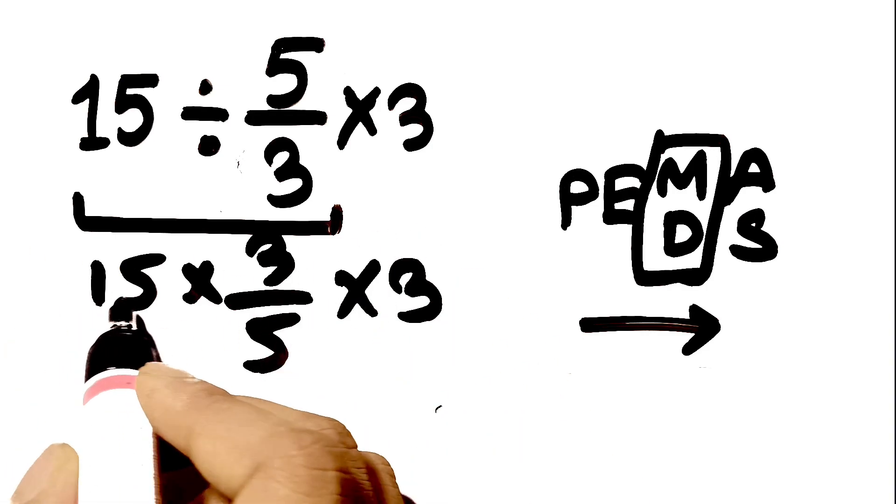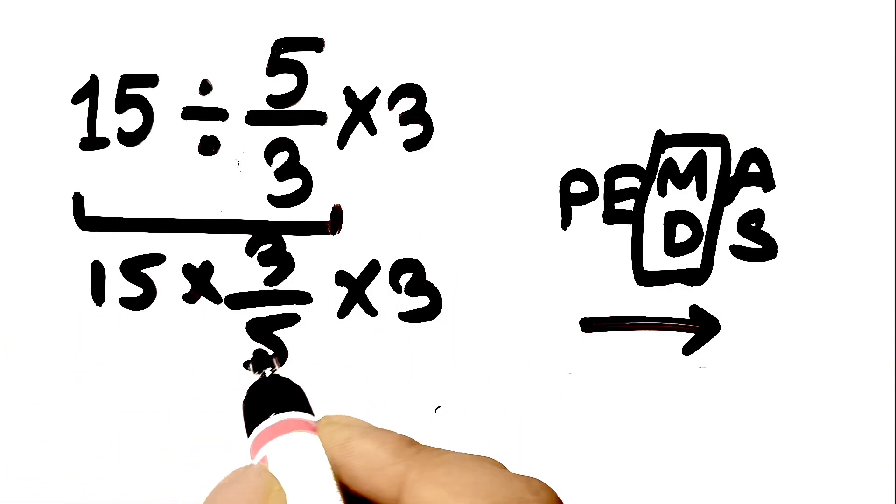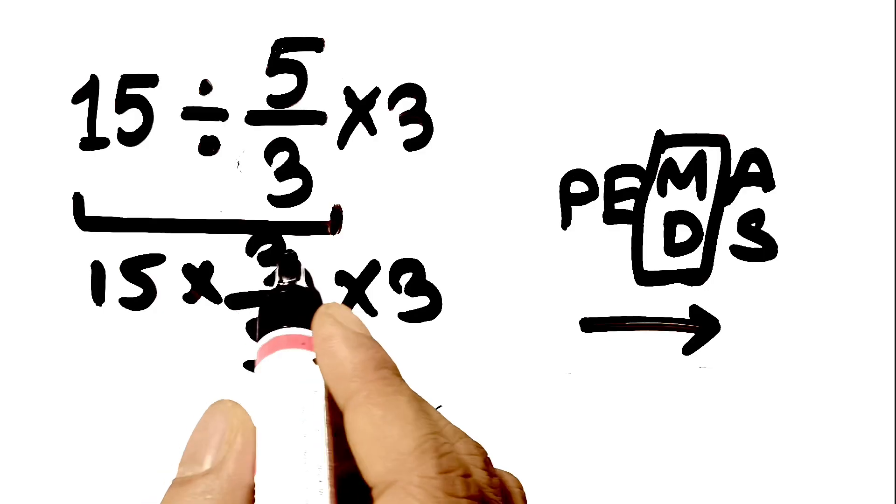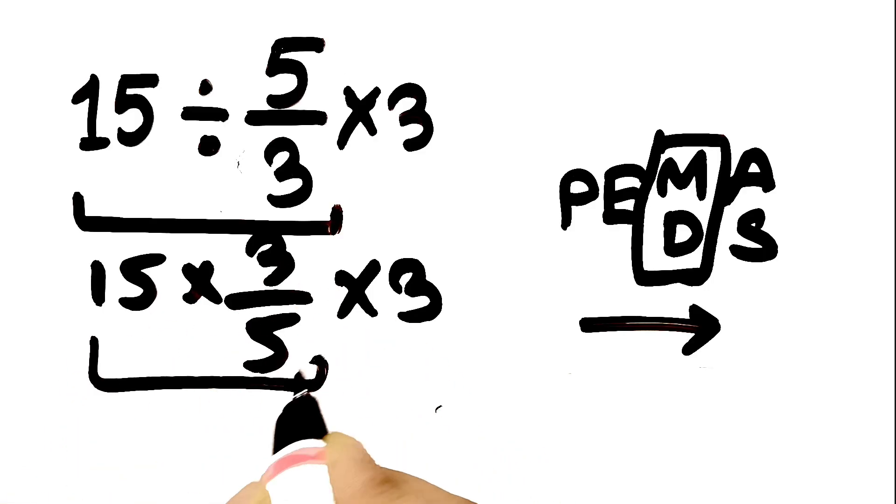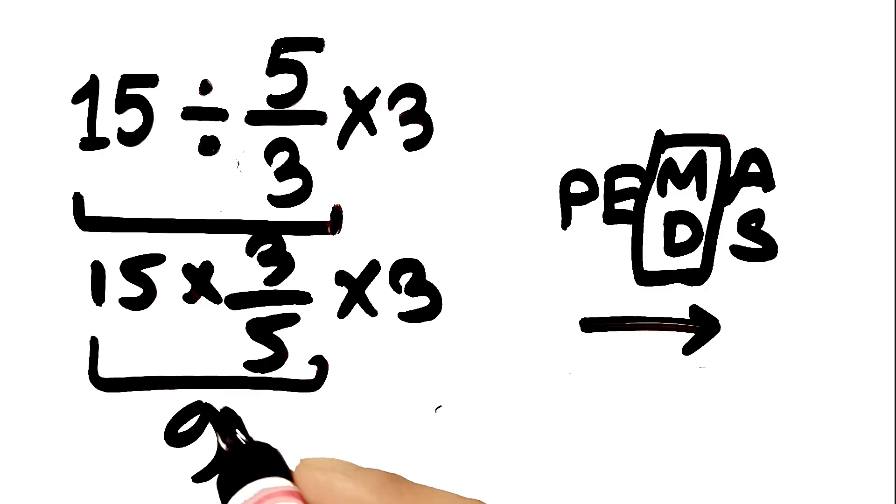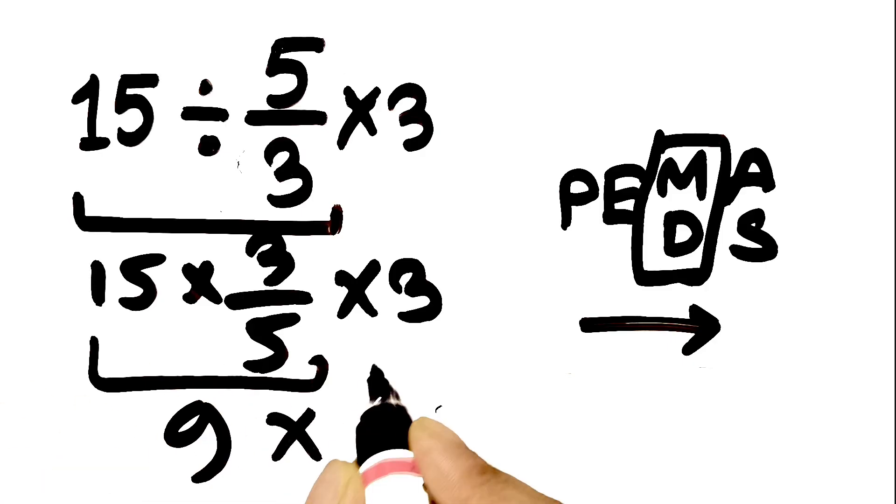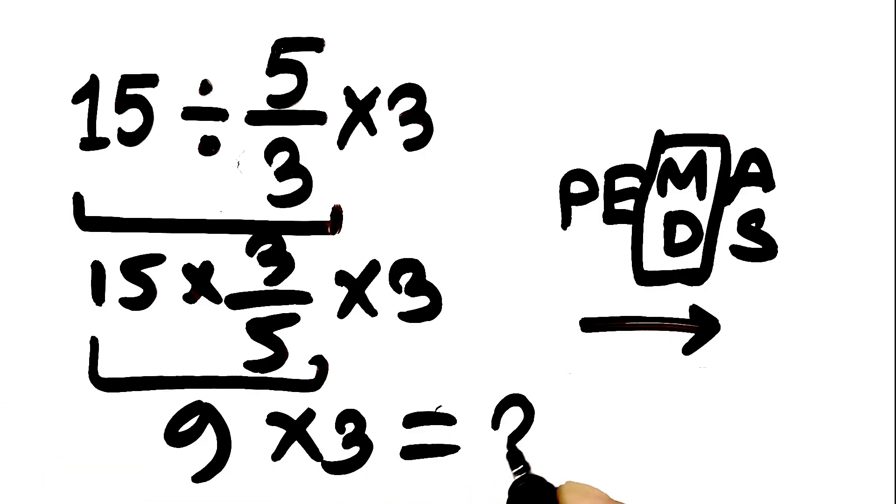So first we do 15 times 3 fifths. 15 times 3 is 45. 45 divided by 5 gives us 9. So the expression is now 9 times 3, which equals 27.